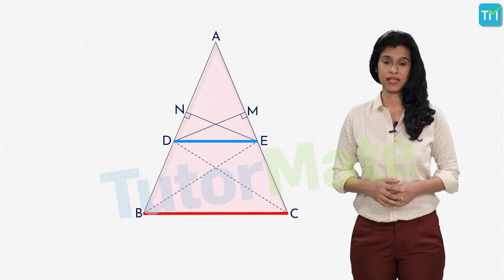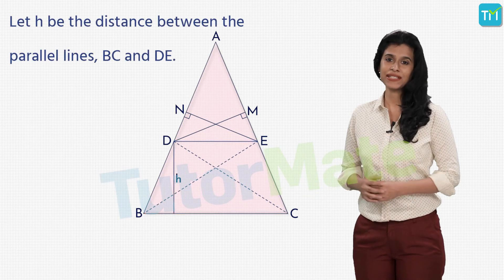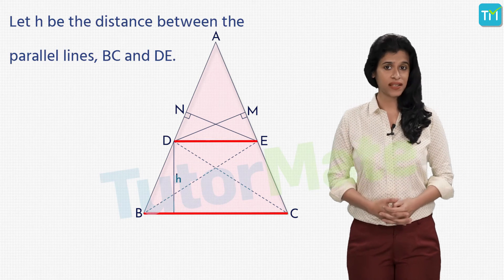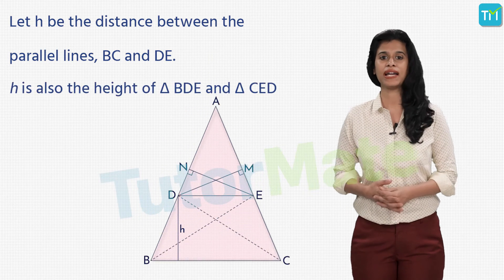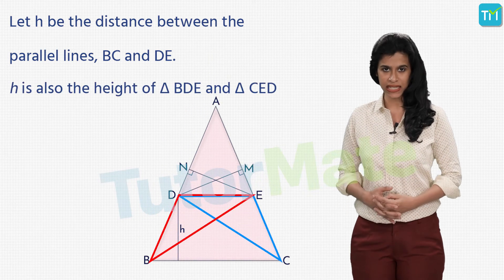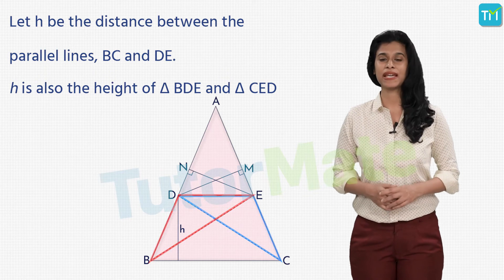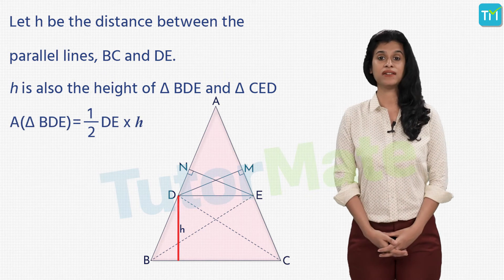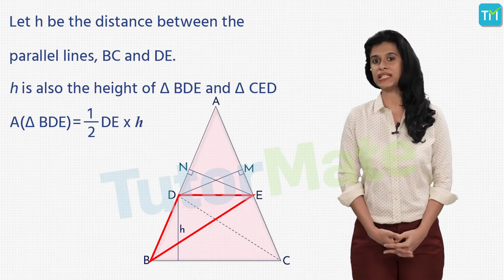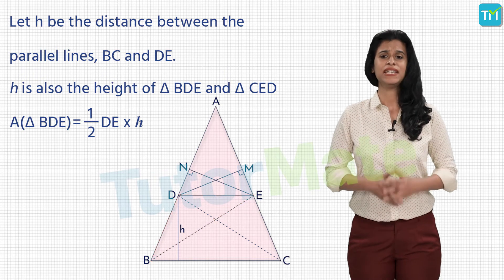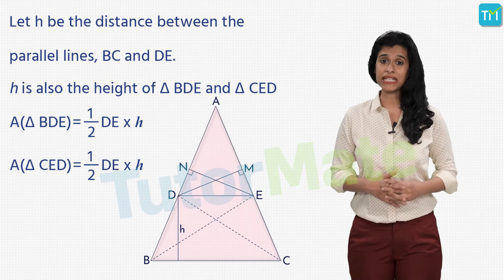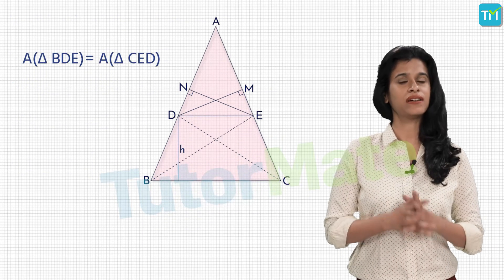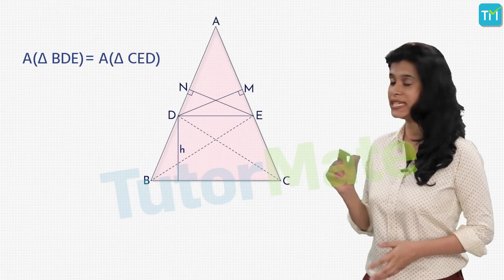Since DE is parallel to BC, the two lines are separated by a constant distance H, where H is the distance between the parallel lines BC and DE. This distance H is also the height of both triangles BDE and CED. Considering DE as the base and H as the height, the area of triangle BDE equals half times DE times H, and the area of triangle CED also equals half times DE times H. Clearly, the area of triangle BDE is equal to the area of triangle CED.